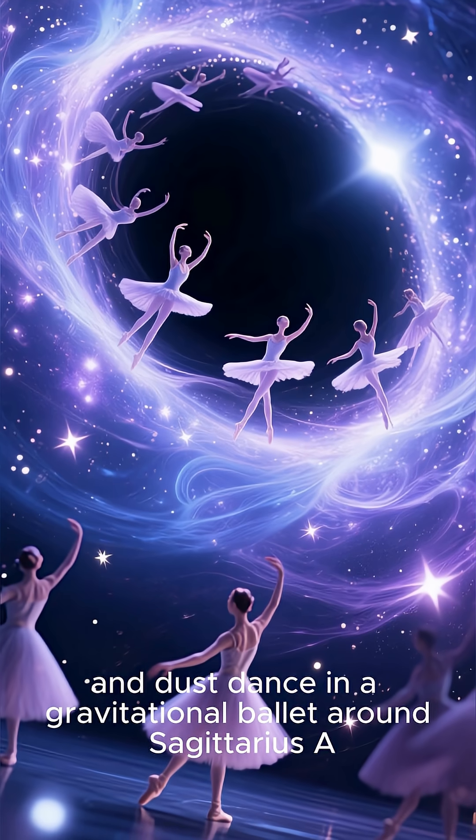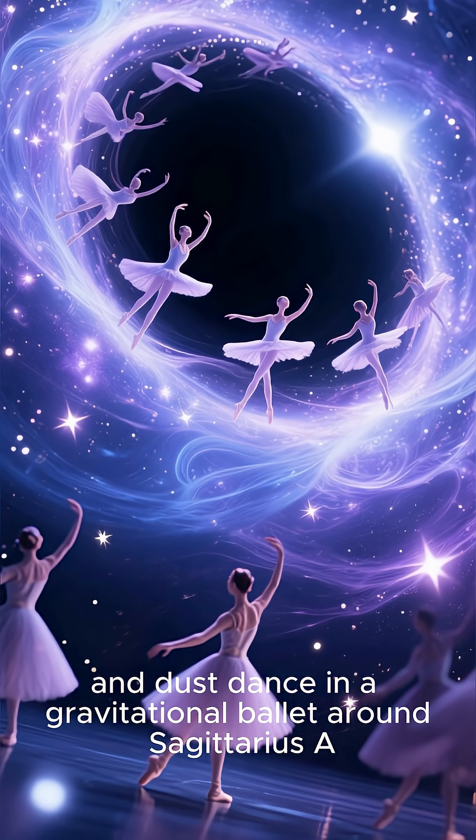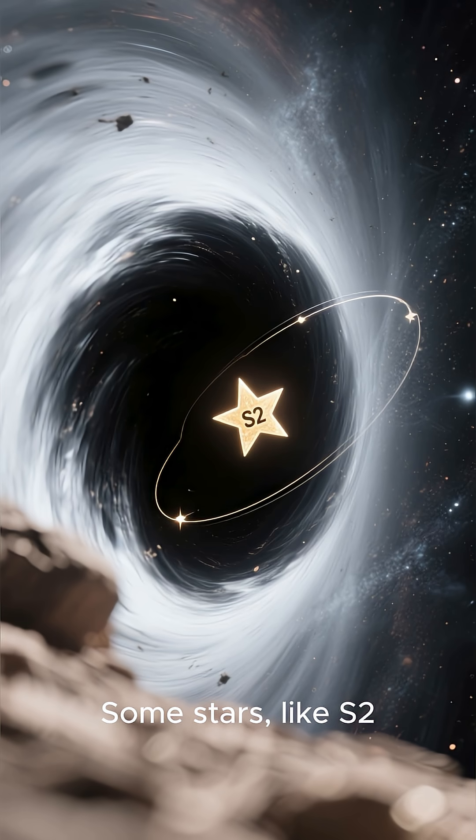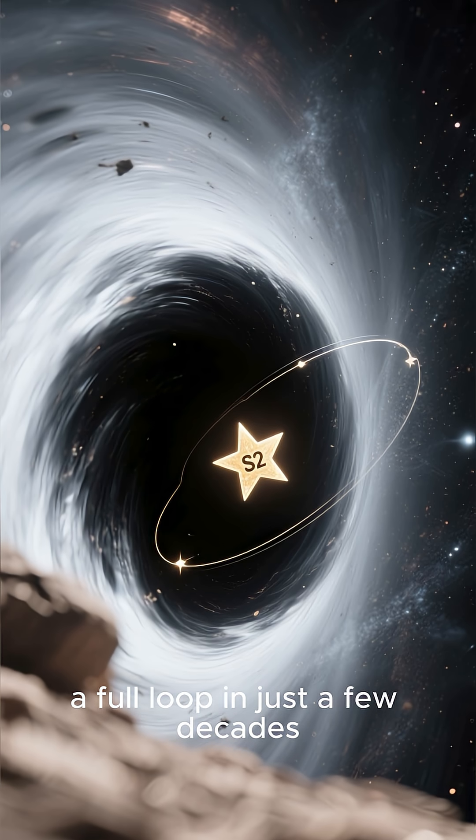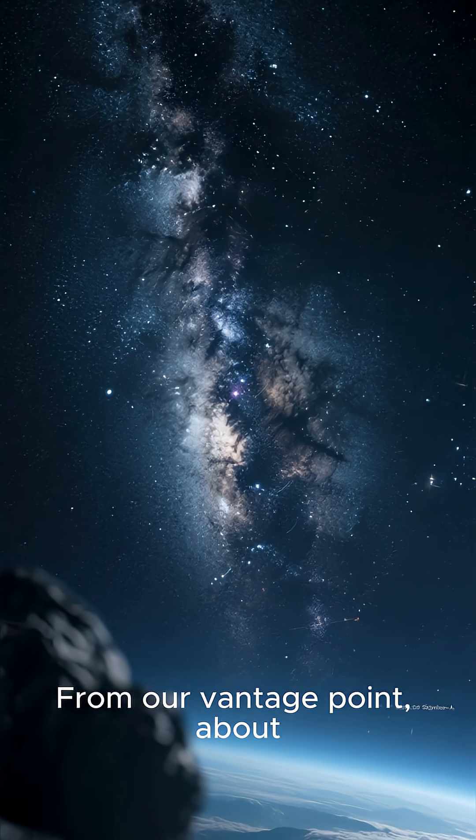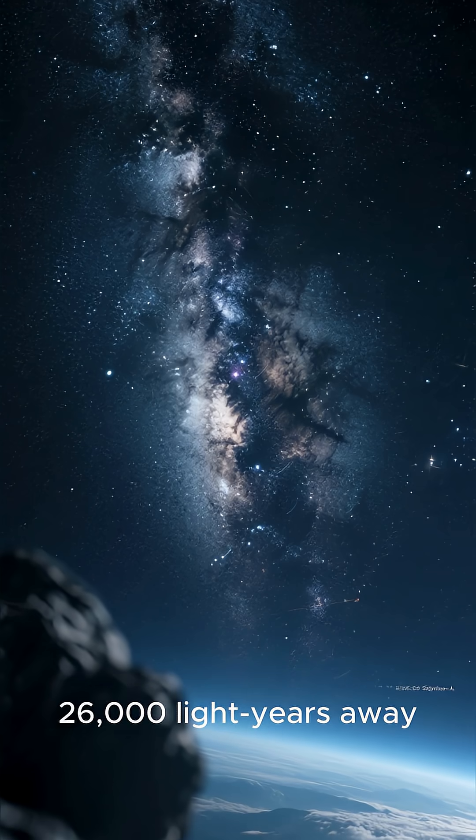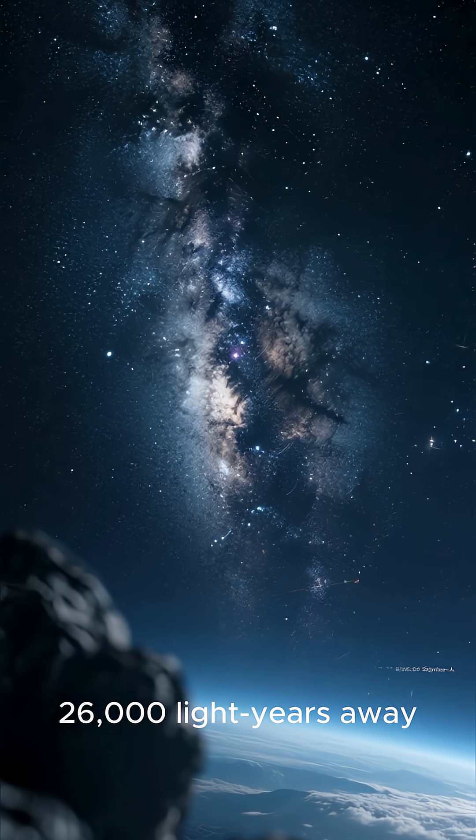Stars, gas, and dust dance in a gravitational ballet around Sagittarius A*. Some stars, like S2, orbit so closely that they complete a full loop in just a few decades. From our vantage point, about 26,000 light-years away, we are far from the danger zone.